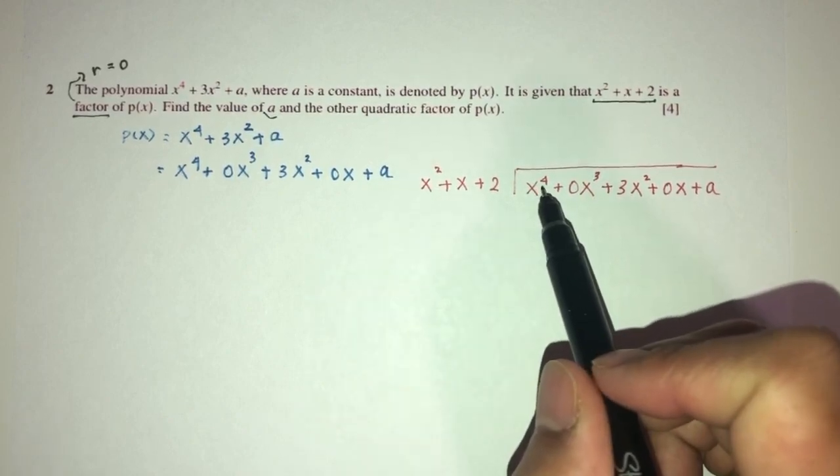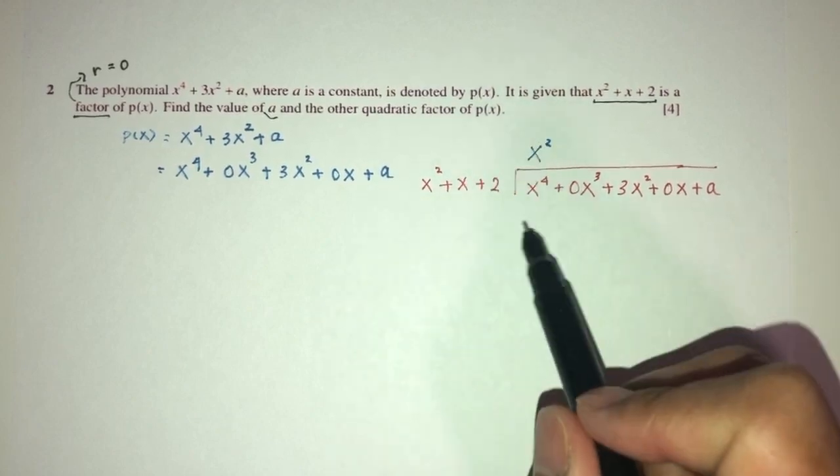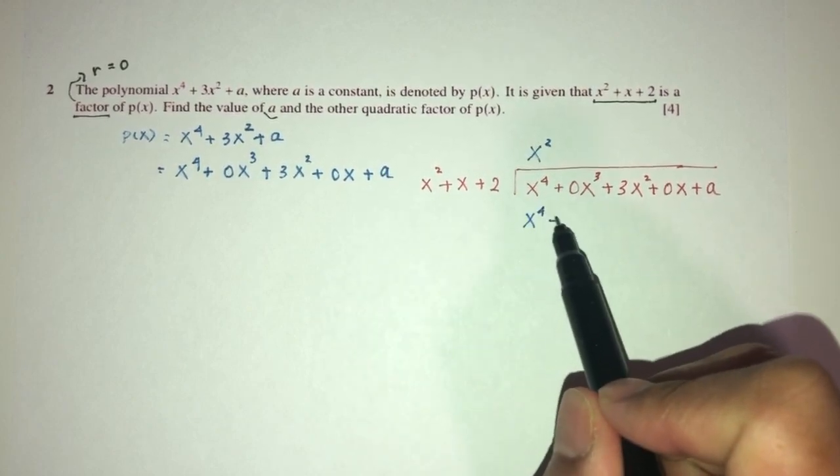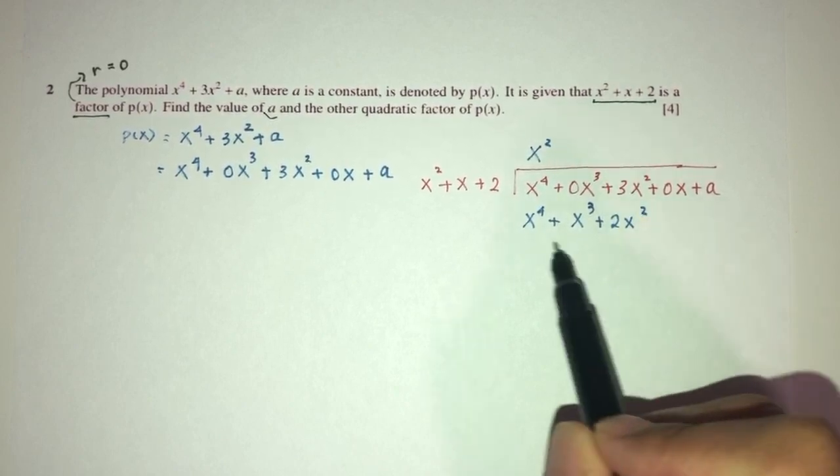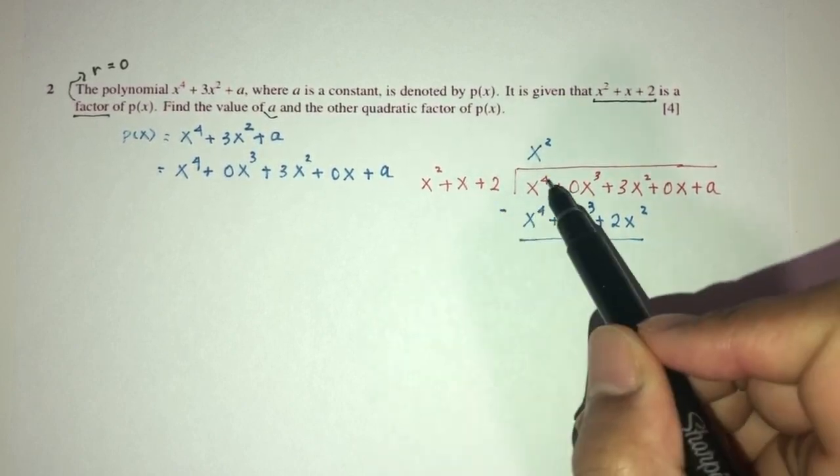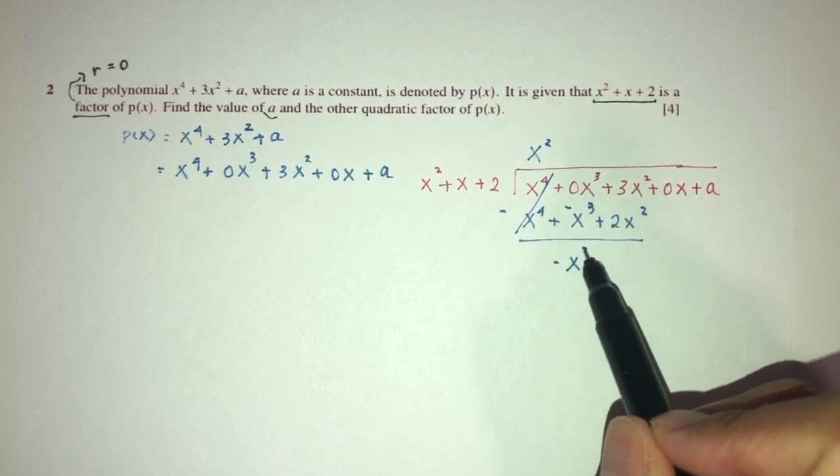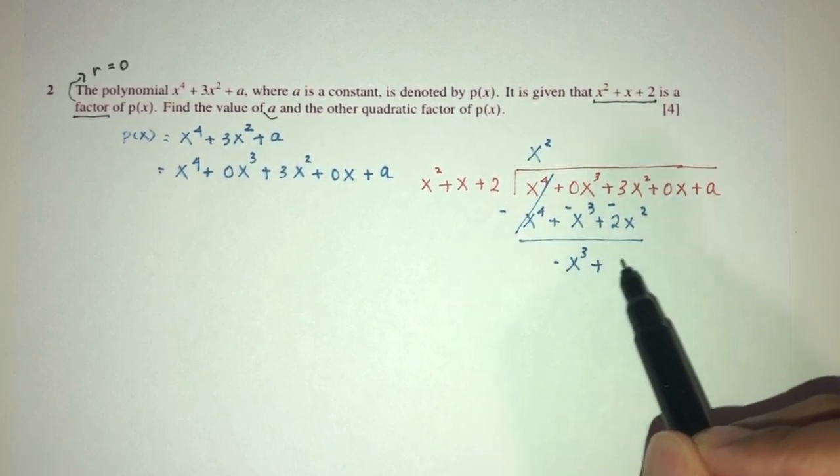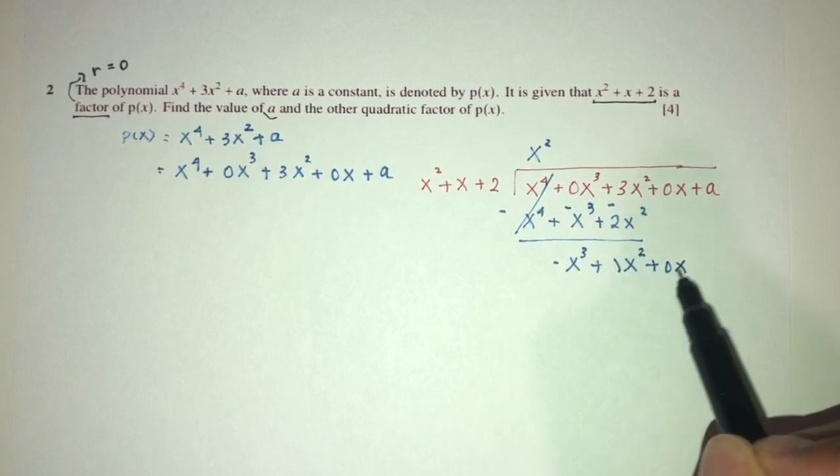I have to multiply by x power 2. Now, take the whole thing times this. You will have x power 4 plus x power 3 plus 2x power 2. Now, minus. This will cancel out. 0 minus this will be minus this. 3 minus 2 will be plus 1x square. You have 0x and plus a.